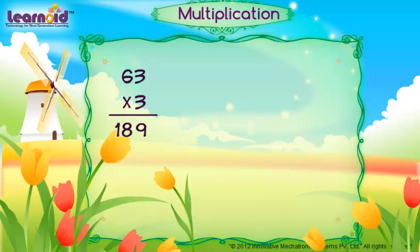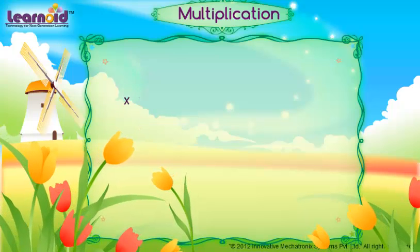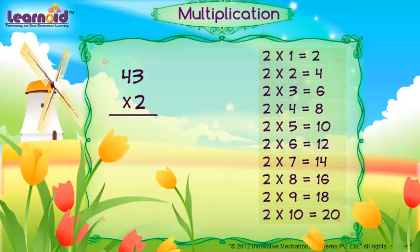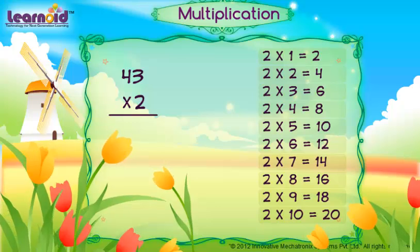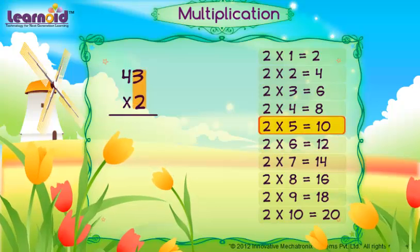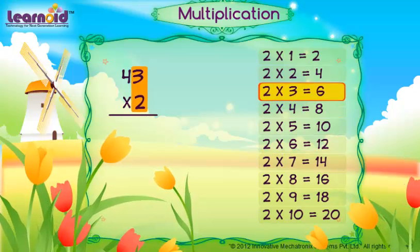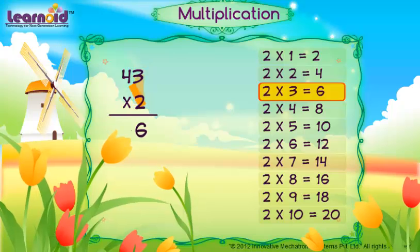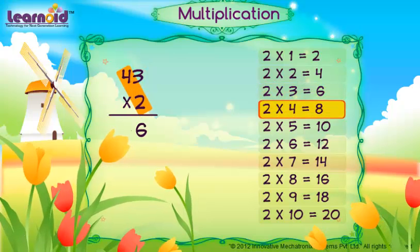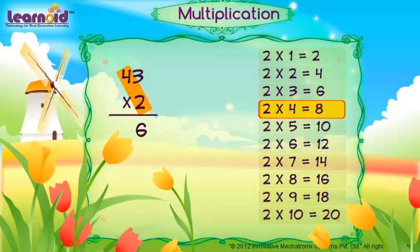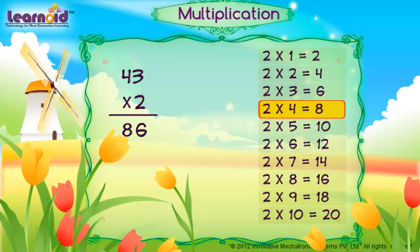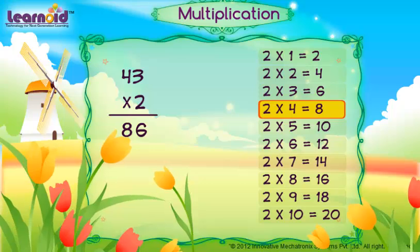Let's see one more example. Multiply 43 with 2. 2 into 3 is 6. Write 6. 2 into 4 is 8. Write 8. Answer is 86.